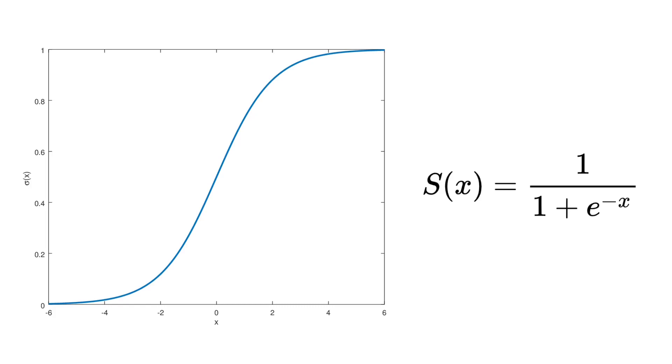the sigmoid function takes as input a real value between minus infinity and plus infinity and outputs a kind of soft step function, converging to zero as x approaches minus infinity and to one as x approaches infinity.